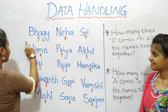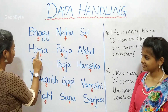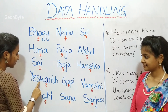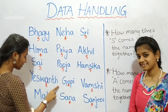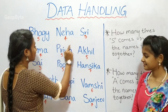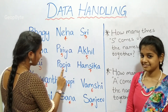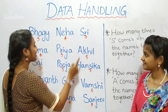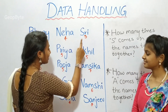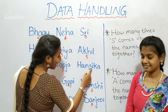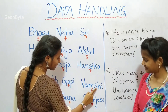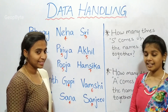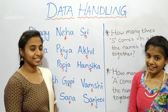How many times does S appear in all the names taken together? Let us see. One, two, three, four, five, six, seven. Now, let us write seven.